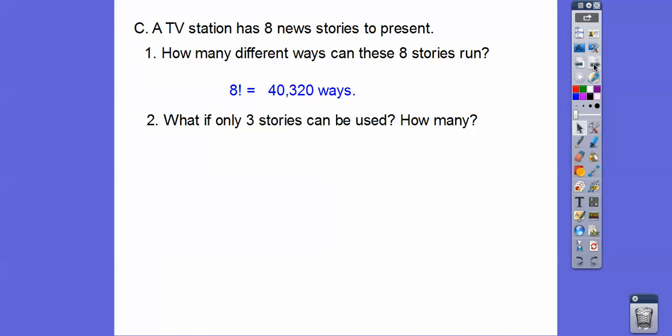So out of these eight new stories, what if only three can be used? How many? Well, if only three can be used, just draw three blank lines in between them, and then put multiply symbols in between them. So there's eight ways to do the first story, eight different ways, and then we already did it. So now there's only seven ways here, and we did two of them. Then there's only six ways. So it's going to be eight times seven times six, and we get 336 ways, okay?